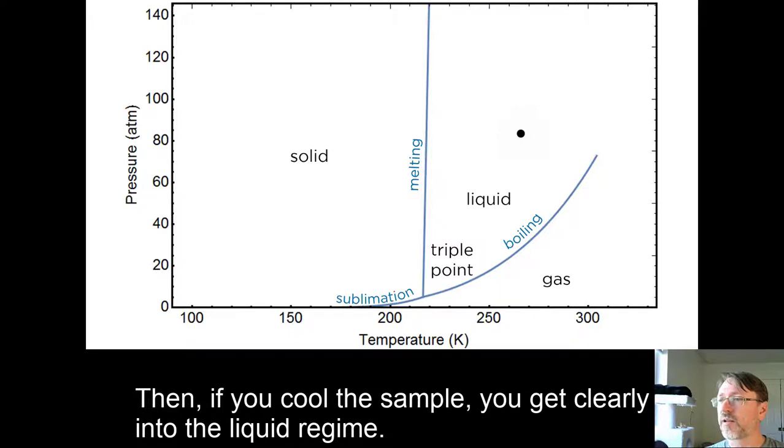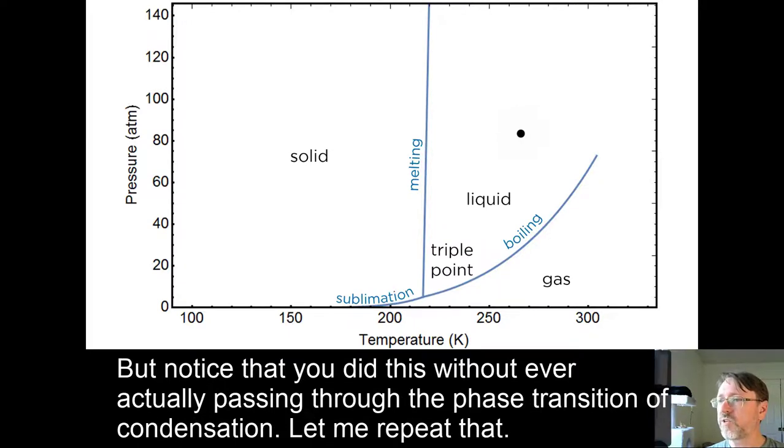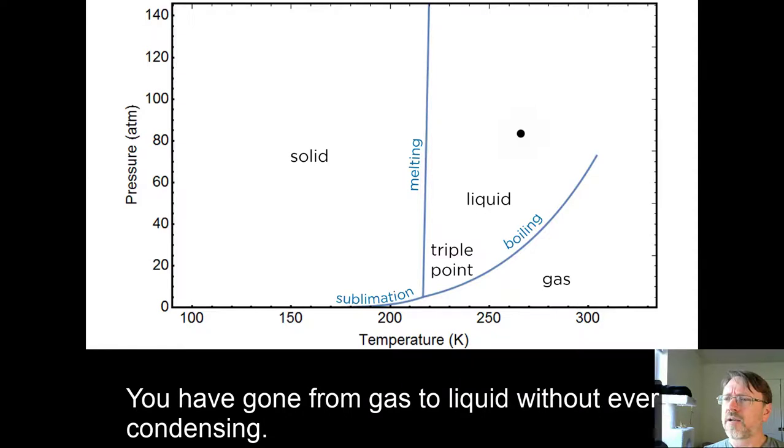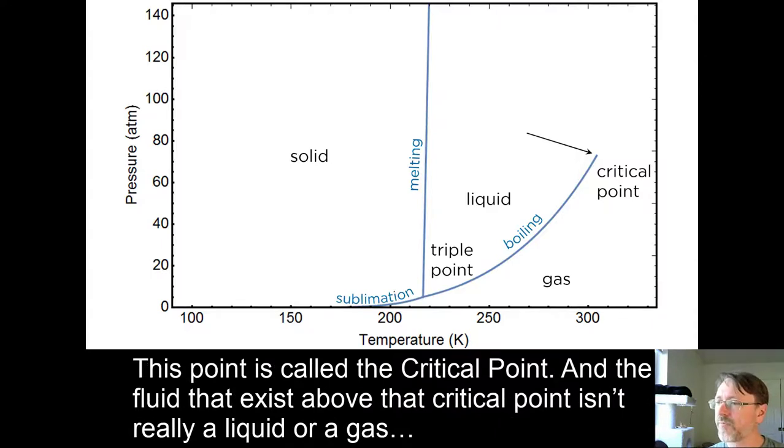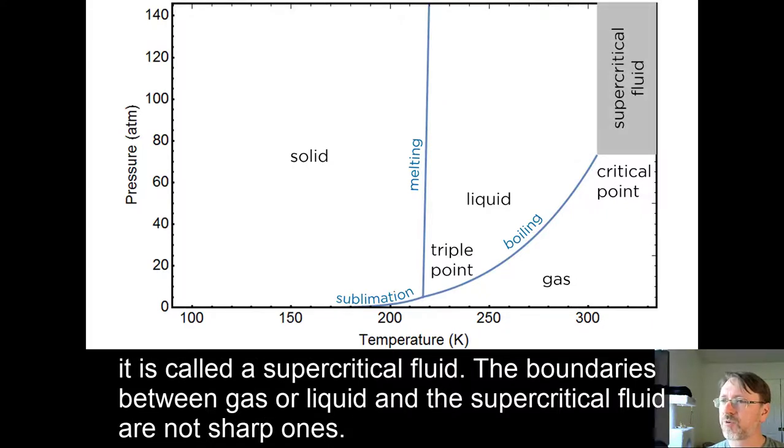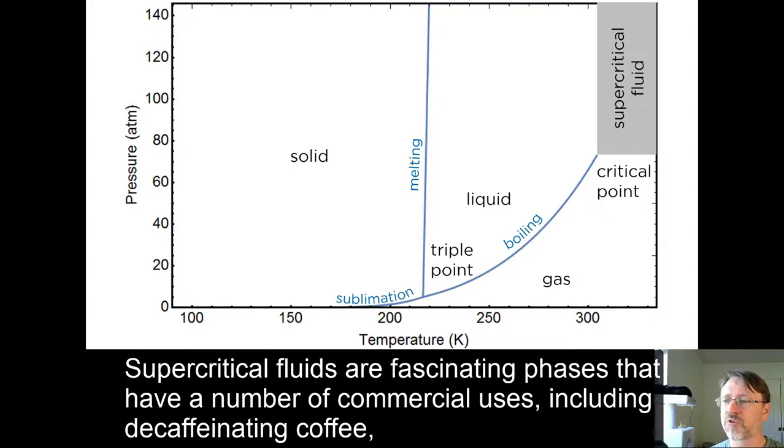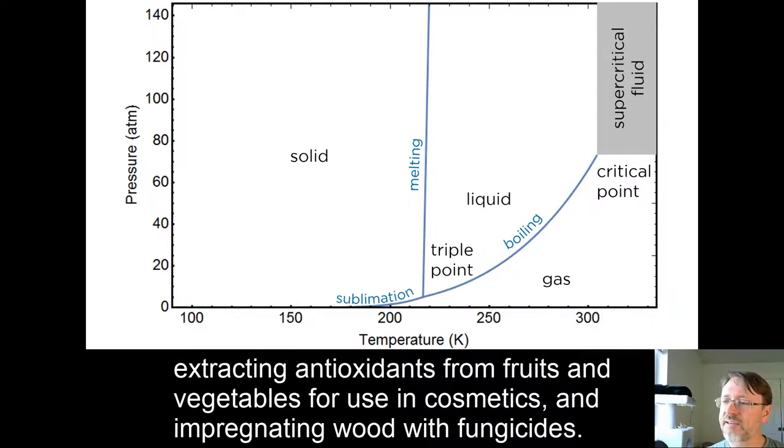Then, if you cool the sample, you get clearly into the liquid regime. But notice that you did this without ever actually passing through the phase transition of condensation. Let me repeat that. You have gone from gas to liquid without ever condensing. This means that there is some point above which the distinction between liquid and gas stops making sense. This point is called the critical point. And the fluid that exists above that critical point isn't really a liquid or a gas. It's called a supercritical fluid. The boundaries between gas or liquid and the supercritical fluid are not sharp ones. Supercritical fluids are fascinating phases that have a number of commercial uses, including decaffeinating coffee, extracting antioxidants from fruits and vegetables for use in cosmetics, and impregnating wood with fungicides.